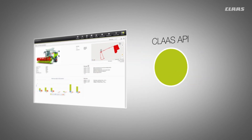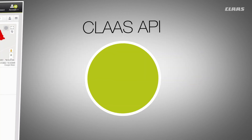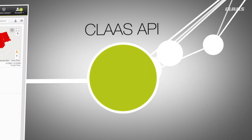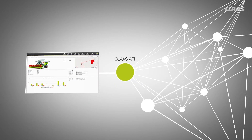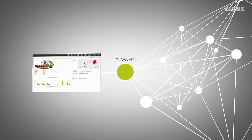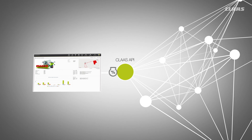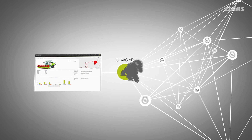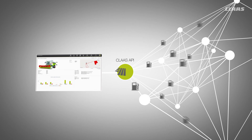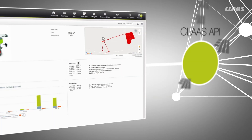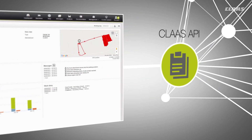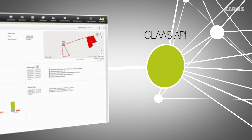With the CLAAS API, Telematics can now share this data with a farm management system. After the initial linking of the software with Telematics by the customer, the systems synchronize continuously. In addition to machine and agronomic data, field boundaries and farm master data can also be synchronized between the systems.